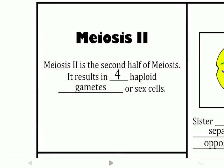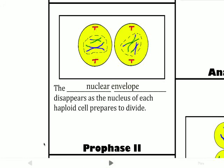After meiosis I, we move right into meiosis II. In this process, we're going to produce four haploid gametes — they'll have half a set of chromosomes and they're gametes because they're sex cells. We take the two cells produced in meiosis I and carry them through all of meiosis II, which is why we have two cells shown here. For prophase 2, the nuclear envelope begins to break down and the centrioles get ready to make the spindle fibers.